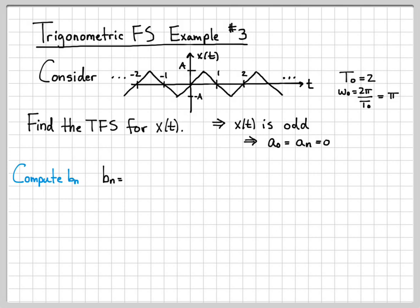All right, let's compute b_n. In general, we have an equation for b_n that is 2 over T_0, the integral over some region of width T_0, x of t times sine. But because this is an odd signal, we can use this special form of that equation. This equation says don't integrate over an interval of width T_0, only integrate over half of it. So this is an integral over half of it, but then multiply by two out front. So this equation right here is only good and applicable to odd signals. And we just need to evaluate this integral for the signal that we have. So let's go ahead and do that.